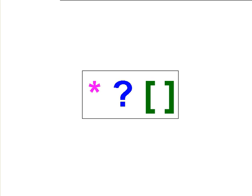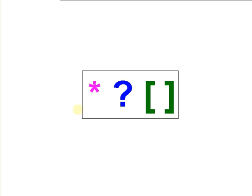The most common wildcards are the star, the question mark, and the square brackets. The star or asterisk represents any character or a string of characters. The question mark represents a single character. And the square brackets represent a range of characters.